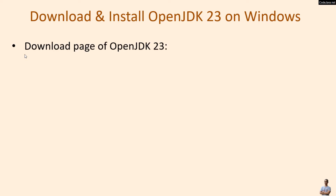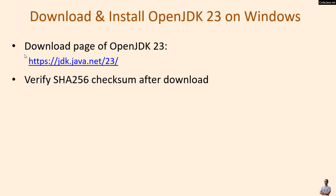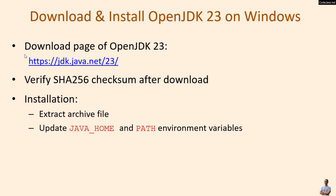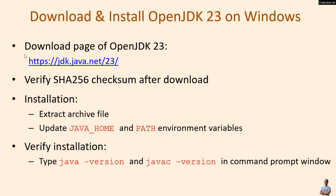To download and install OpenJDK 23 on Windows, it's strongly recommended to download the zip archive file from its official download page at jdk.java.net/23. It's also recommended to verify the SHA-256 checksum of the downloaded archive. For installation, extract the archive and update the JAVA_HOME and PATH environment variables. To verify, open a new command prompt and type java -version and javac -version.